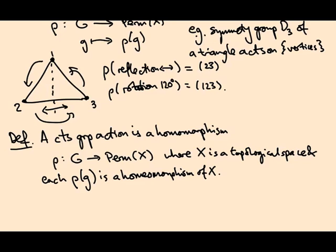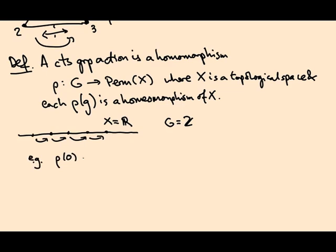So for example, here's a very simple example, but it's a really important example for this course. You could take X to be the real line, and you could take G to be the integers. And the action would be translation by an integer amount along the real axis.